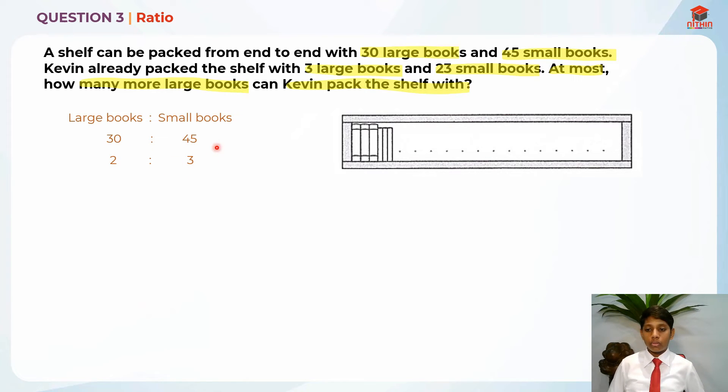And so now we are going to find one small book is how many large books. So one small book is actually two-thirds of a large book. And so how many books is 23 small books? So 23 small books is actually 15 and one-third large books.